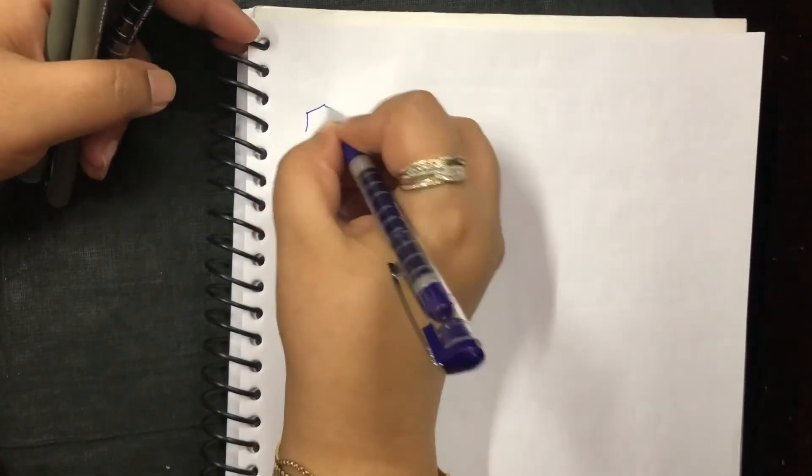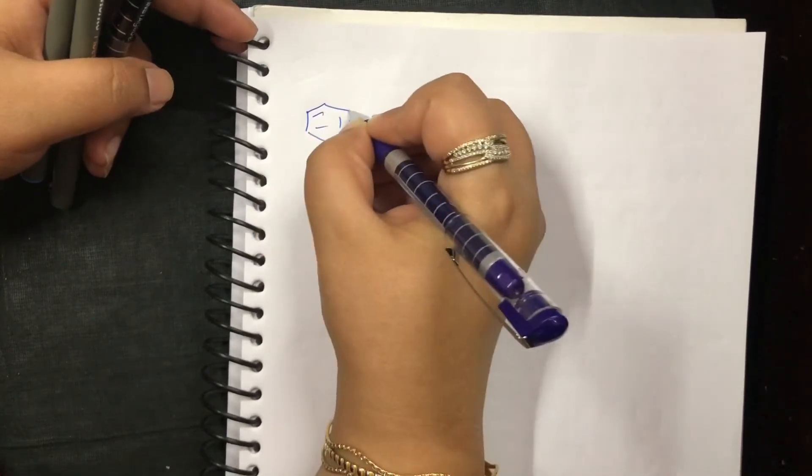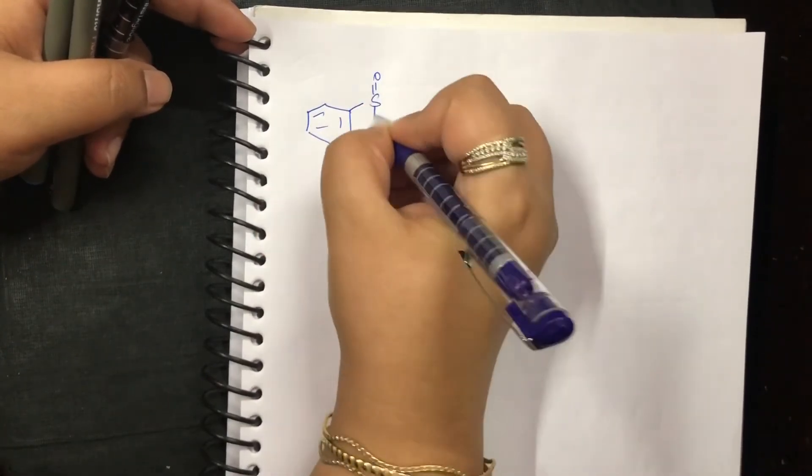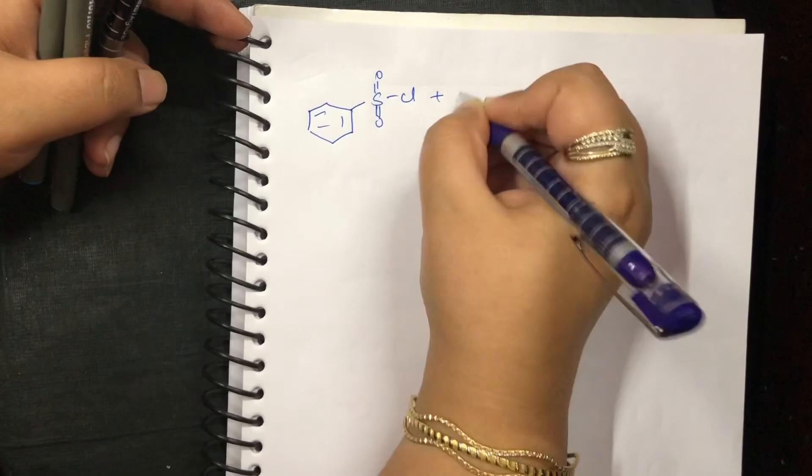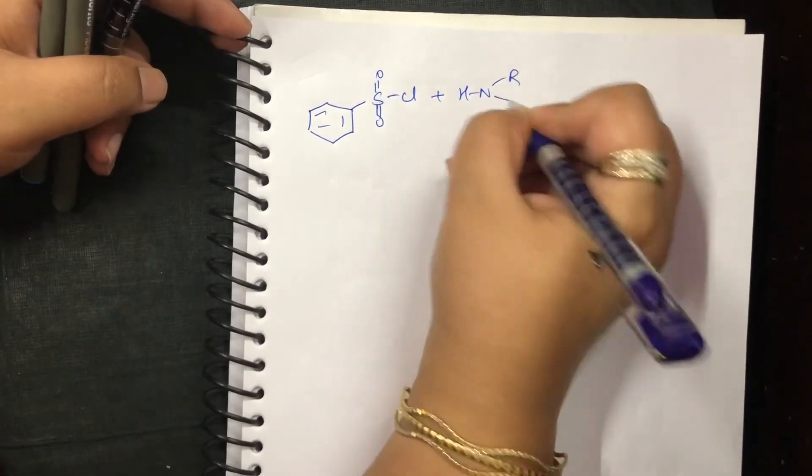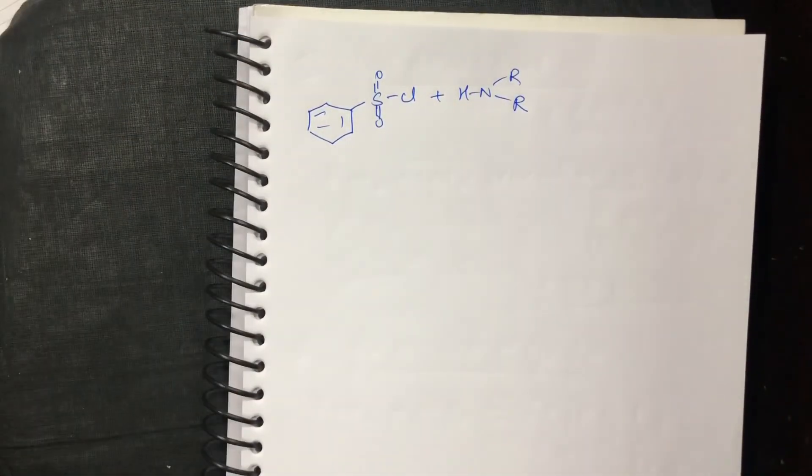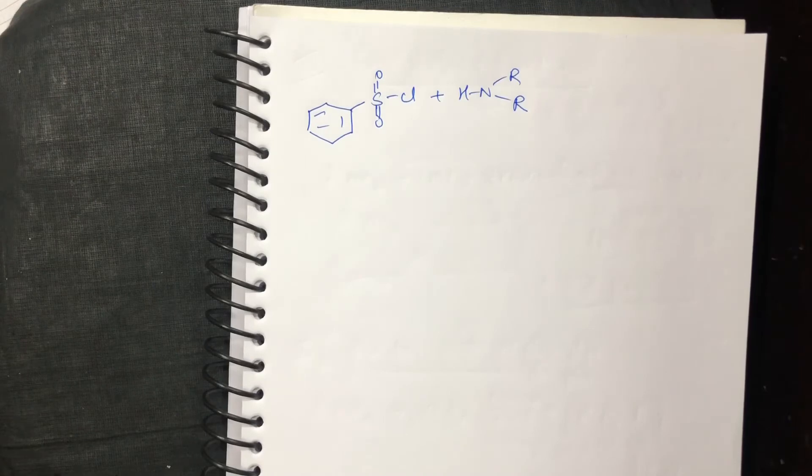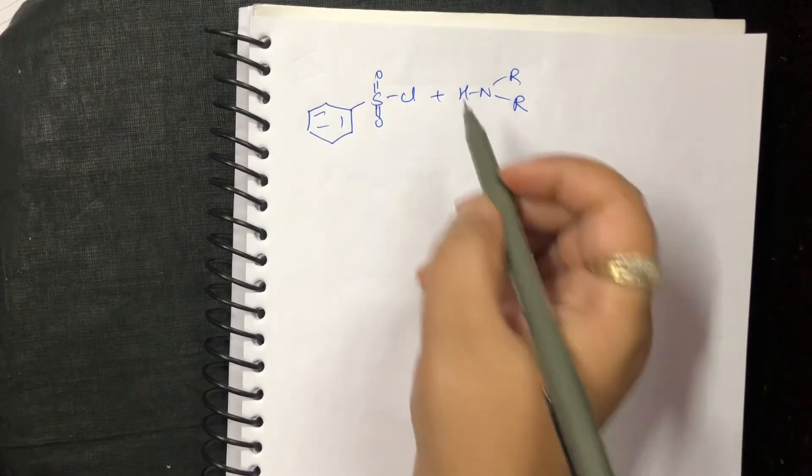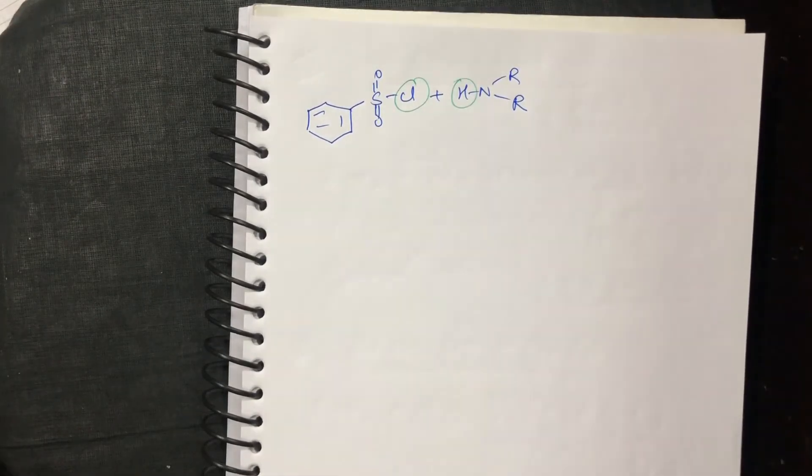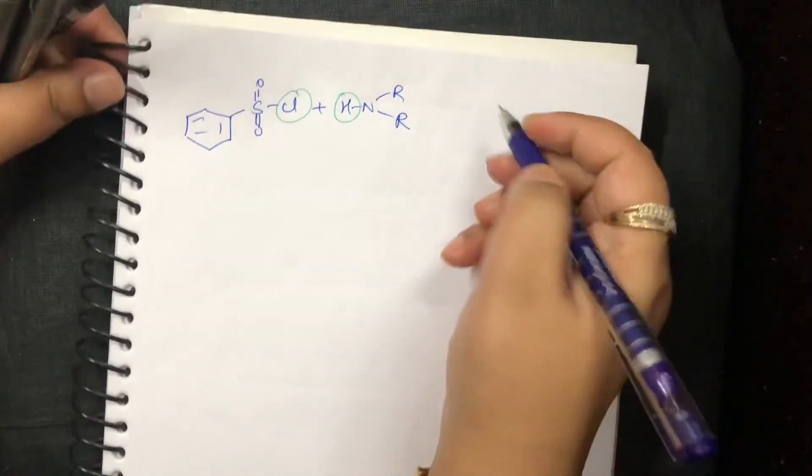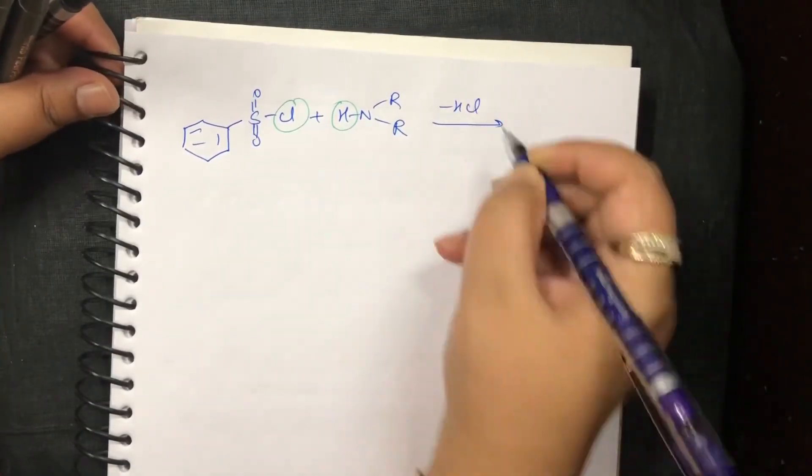But at the same time, when you do it with a secondary amine, let me do it with a secondary amine also. Now, instead of doing all the steps in the mechanism, I can directly write that this Cl and this hydrogen will leave. So, this would be minus HCl and I will get the compound like this.